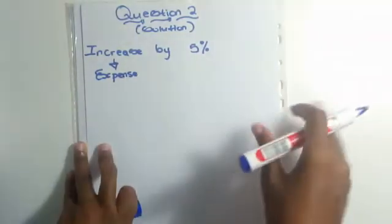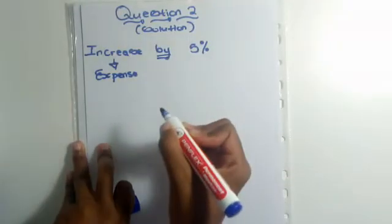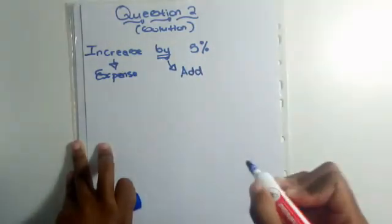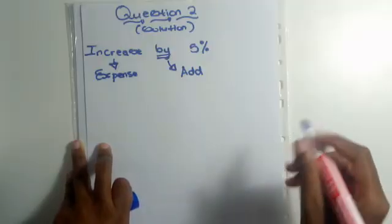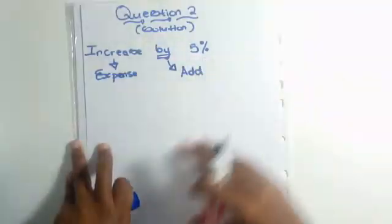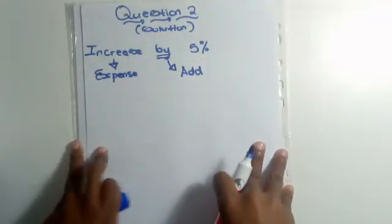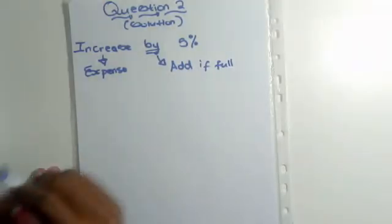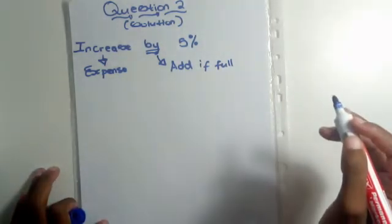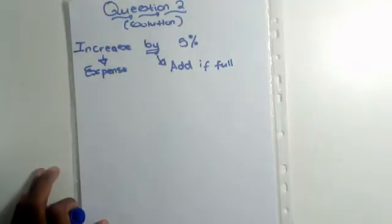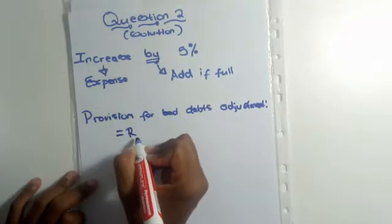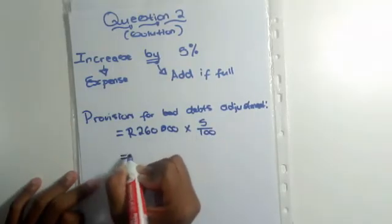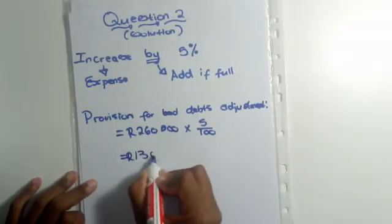Instead of saying to 5%, this time we have by 5%. This means that whatever amount we calculate, we take that whole amount and add it to the amount already in our trial balance, which is R500. So whatever we get from calculating 5%, we add the whole amount to R500. When the question says by, whatever we calculate is our adjustment directly. So: provision for bad debts adjustment = R260,000 × 5/100 = R13,000.